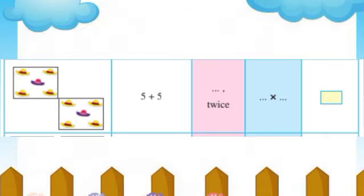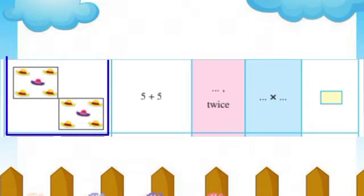Let's see the next picture. Here are hats — 5 hats in one box. This is one box. In the next column, one hat is five parts. And now two boxes. As an addition: 5 plus 5.